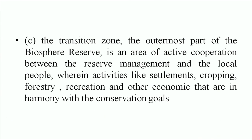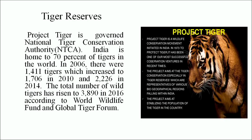The buffer zone surrounds the core zone and is managed to accommodate a great variety of resource use strategies, research and educational activities. The transition zone is the outermost part, an area of active cooperation between reserve management and local people, where activities like settlements, cropping, forestry, recreation and other economic uses are in harmony with conservation goals. Tiger reserves: Project Tiger is governed by the National Tiger Conservation Authority. India is home to 70% of tigers in the world. In 2006 there were 1,411 tigers, which increased to 1,706 in 2010 and 2,226 in 2014. The total number of wild tigers rose to 3,890 in 2016 according to the World Wildlife Fund and Global Tiger Forum.